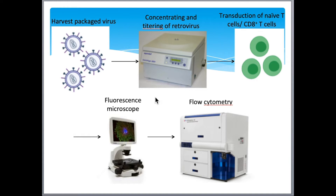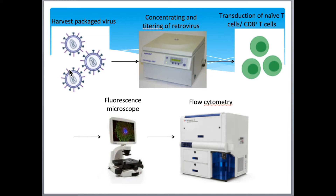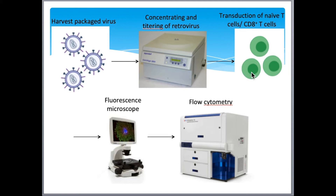After assessing transfection efficiency, we harvested the packaged retrovirus after 48 hours by collecting the supernatant and concentrating by high-speed centrifugation for four hours. We then performed titering of the virus using BWL 2.2 CD8 cells, a T cell hybridoma generated in our lab. Meanwhile, mouse CD8 cells and human T cells cultured under IL-7 conditions were transduced by adding the packaged retrovirus with F108 enhancer agent, followed by spin infection involving centrifugation for 60 minutes at 1000g at room temperature. Transduction efficacy was assessed using fluorescence microscopy and flow cytometry through staining with fluorescent antibodies.